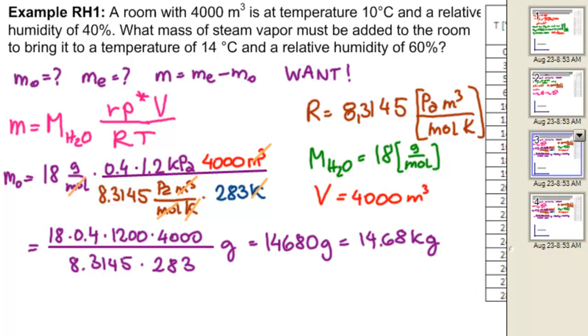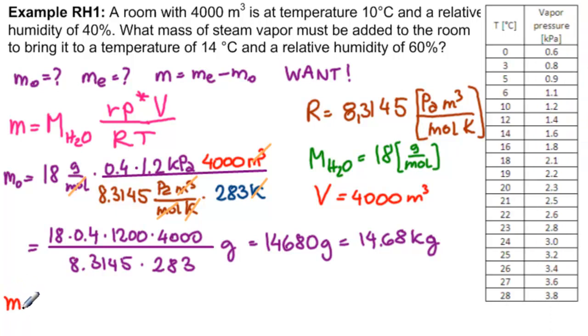We know the units are good. So all we will do is write in. So ME equals 18 times 0.6 now. We need to find that. Multiply it by whatever temperature is. 14. So 1,600 times 4,000 divided by 8.3145. And here we have 14 plus 273.